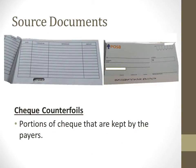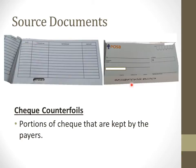The next source document is check counterfoils. This is your check, and this is your check counterfoil — these are portions of checks kept by the payers, meaning the person who issues the check. When you write a check, you detach it and give it to the person you want to pay. The counterfoil is your reference — you write down the date, the check number, and under reference, who you are paying to and the amount. It is a simple personal record.